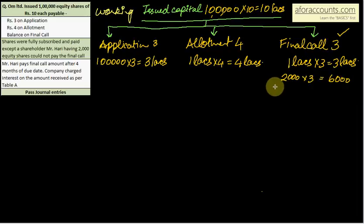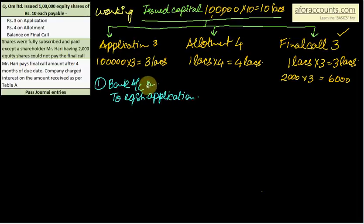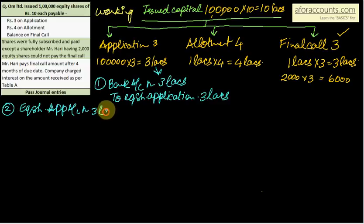Let's start with the journal entries. First, paisa aya application ka bank mein. Your first entry will be bank account debit to equity share application 3 lakhs. Second entry, transfer to capital. Equity share application account debit 3 lakhs to equity share capital.